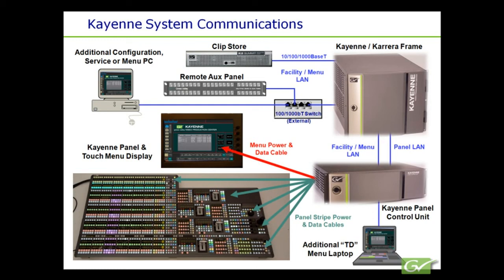The Cayenne panel is connected to the panel control unit, referred to as the PCU, via individual cables as indicated by the green arrows, one for each stripe. A stripe is a panel module tray consisting of a source module, transition module, and a local EMEM module, and in some cases an additional module. The AuxBus module is also a stripe.